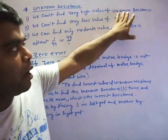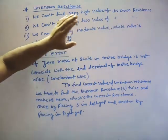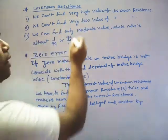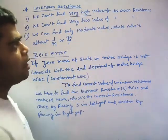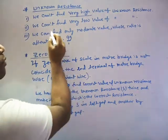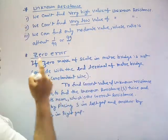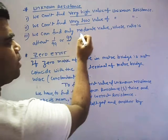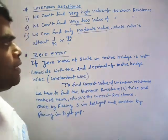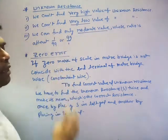When we find unknown resistance through meter bridge, we have to keep in mind that the value of that unknown should not be very high. We cannot find very high value of unknown resistance, number one. We also cannot find very low value, number two. And number three, we can find only the moderate value, at least whose ratio is coming in the order of 1 by 99 or 99 is to 1.